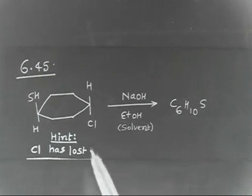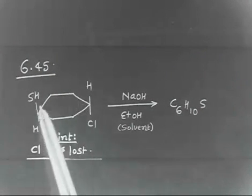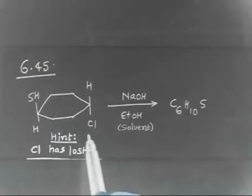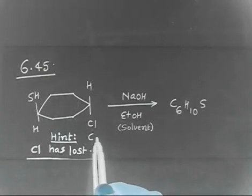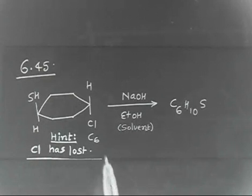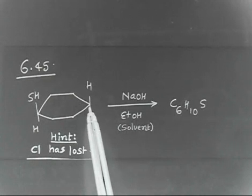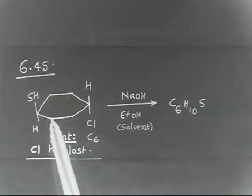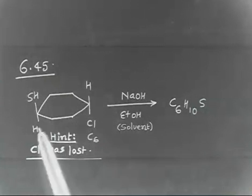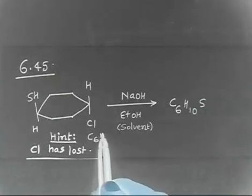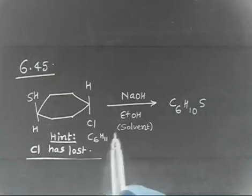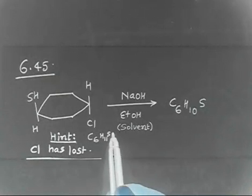So you see, what is the molecular formula here? You have 6 carbon. This compound has 6 carbon. How many hydrogen you have? You see, there are 2, 4, 6, 8, 9, 10, 11. So you have 11 hydrogen. And you have 1 sulfur and 1 chlorine.